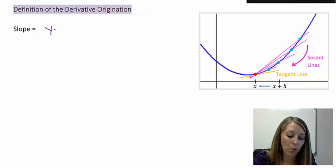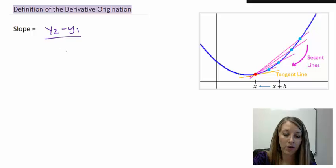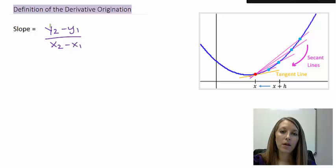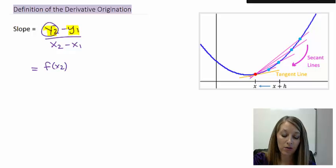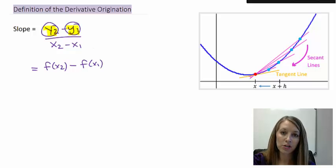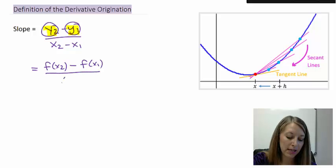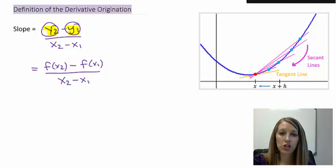The slope formula is defined as the rise — the difference between my y values — over the run — the difference between my x values. Let me switch to function notation: instead of y, I'll use f of x2 for the second y value, minus f of x1 for the first y value, over x2 minus x1. I'm just changing the notation from y to function notation.